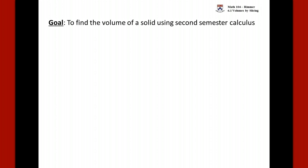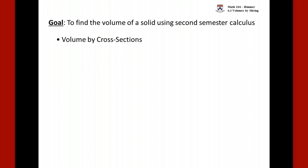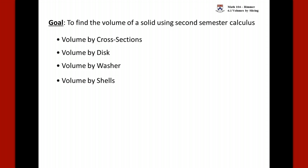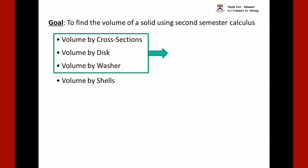The general title of this section is volume by slicing. Our goal is to find the volume of a solid using second semester calculus. There are four different types of ways to find volume: volume by cross sections, volume by disc, volume by washer, and volume by shells.